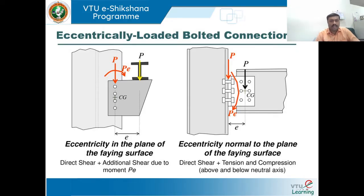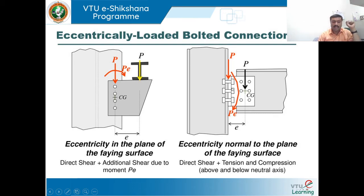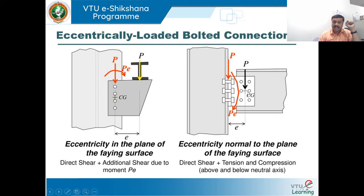Welcome back to bolted connections. In the last class we discussed eccentric loading bolted connection Case 1, eccentric in the plane of the facing surface. Now in Case 2, eccentric normally to the plane of the facing surface. Here brackets are attached to the flange, and bolt groups are subjected to loading eccentric to the shear plane. The line of rotation does not pass through the center of gravity of the bolt group, so bolts are subjected to direct shear along with tension due to the moment.